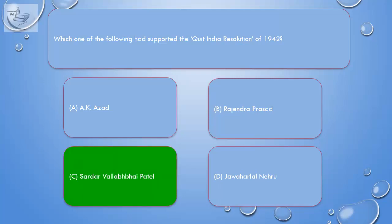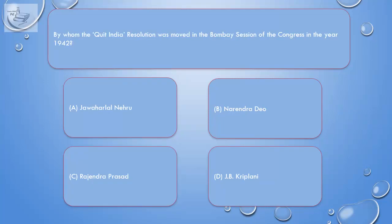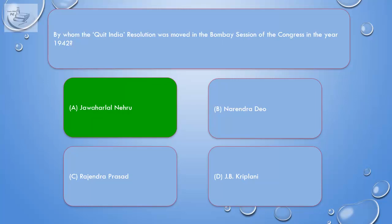Question: By whom was the Quit India Resolution moved in the Bombay session of the Congress in the year 1942? A. Jawaharlal Nehru, B. Narendra Dev, C. Rajendra Prasad, D. J. B. Kripalani. Correct answer is A: Jawaharlal Nehru.